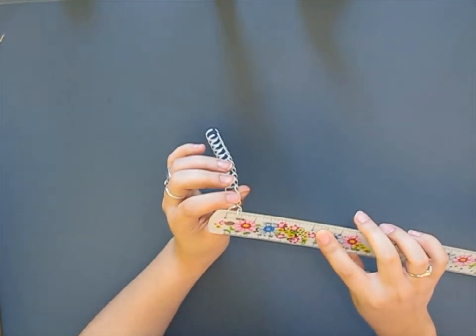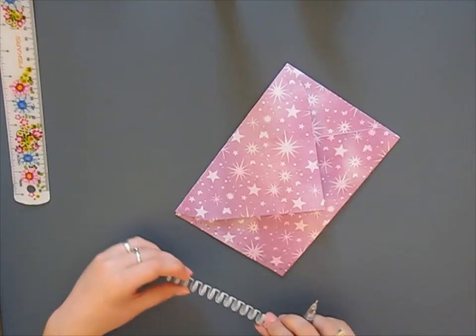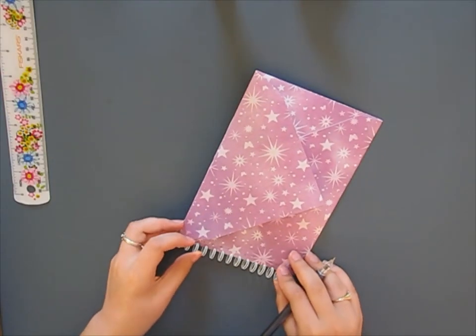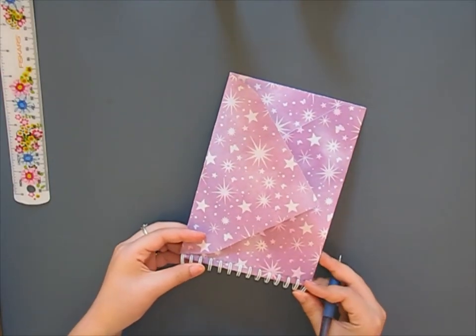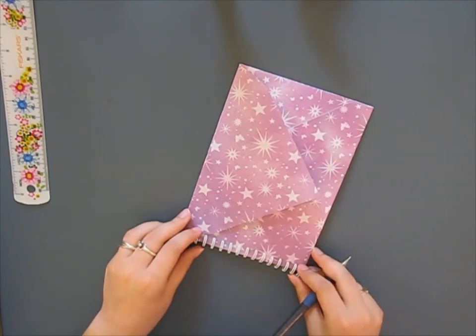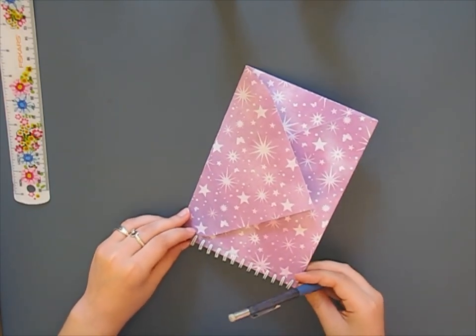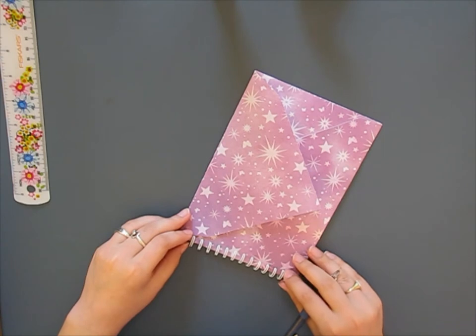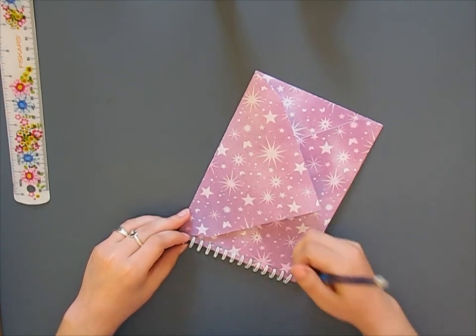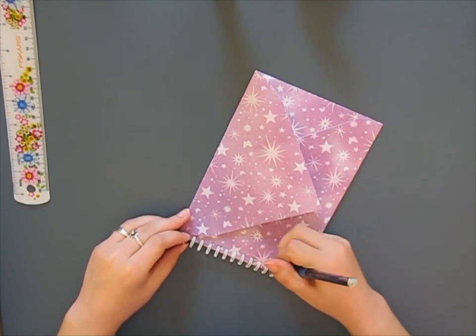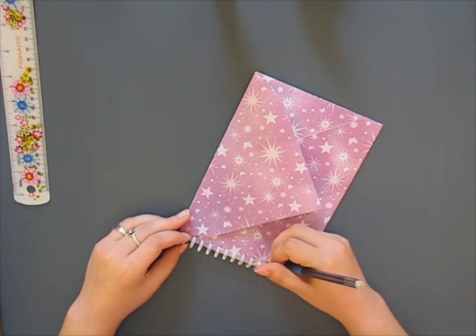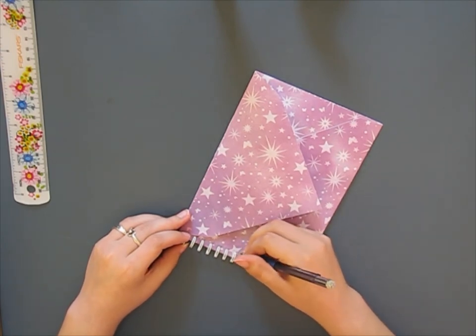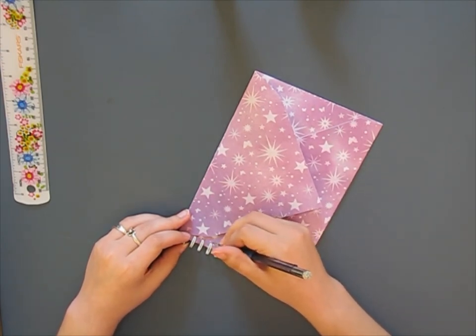While you are waiting for the glue on your cover to dry, you are going to measure out where the holes are going to be on your envelopes. I did this by measuring the diameter of my spiral binding and cutting it in half. This will give me the positioning of where my holes are going to be. I also put the spiral binding up next to my envelope to make sure I got the spacing of the holes correct.